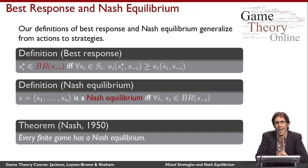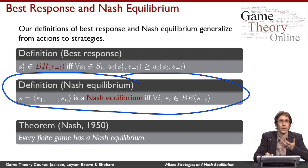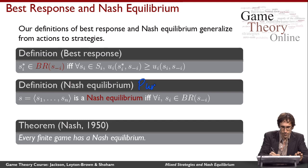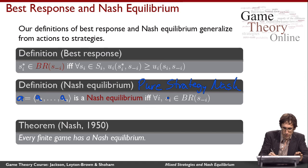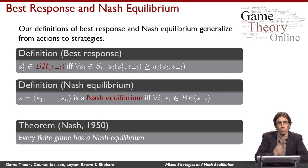This result only holds when we have the fuller definition of Nash equilibrium in terms of strategies. When we talked about Nash equilibrium in terms of just actions — what we'll now refer to as pure strategy Nash equilibrium — we don't get a theorem that says every finite game has one. But this mixed strategy Nash equilibrium always exists.